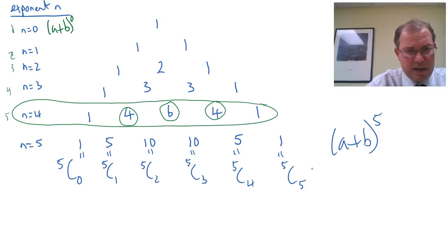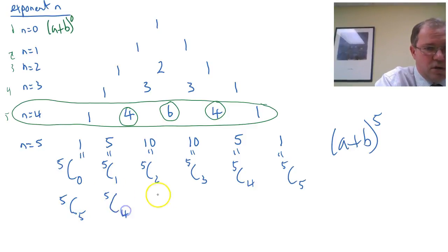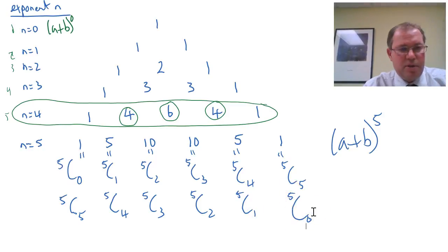Of course, because Pascal's triangle is symmetrical, you could equally consider this as 5 choose 5. This one is 5 choose 4. This one is 5 choose 3. This is 5 choose 2. This is 5 choose 1. And this is 5 choose 0 because of the symmetry.